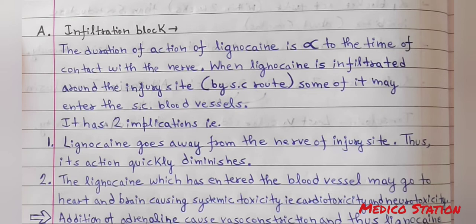When lignocaine is infiltrated around the injury site by subcutaneous route, some of it may enter the subcutaneous blood vessels. This has two implications: lignocaine goes away from the nerve of the injury site, thus its action quickly diminishes. The lignocaine which has entered the blood vessel may go to the heart and brain, causing systemic toxicity — cardiotoxicity and neurotoxicity.